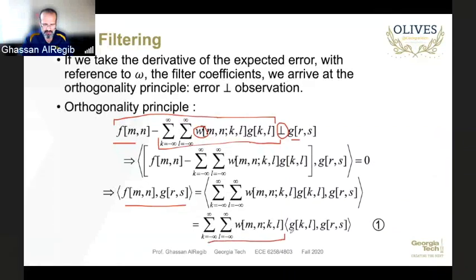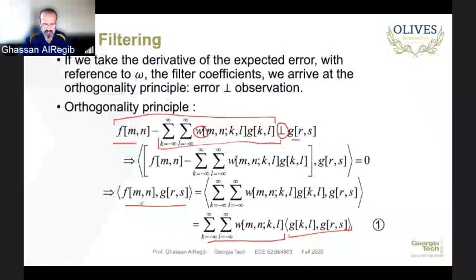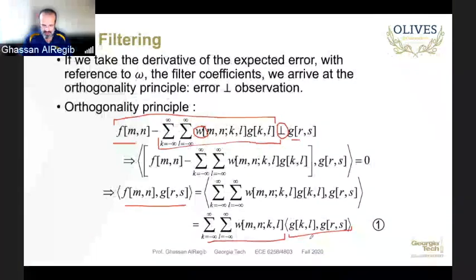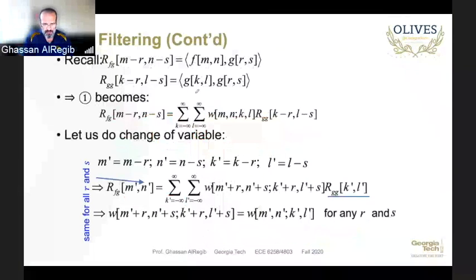Going with this principle, on the left-hand side we have nothing but the cross-correlation between f and g, and on the right-hand side we have the summation of these weights times the autocorrelation of g. With the wide-sense stationary assumption, the left-hand side is the cross-correlation R_fg as a function of (m−r, n−s), and the autocorrelation of g is R_gg(k−r, n−s).